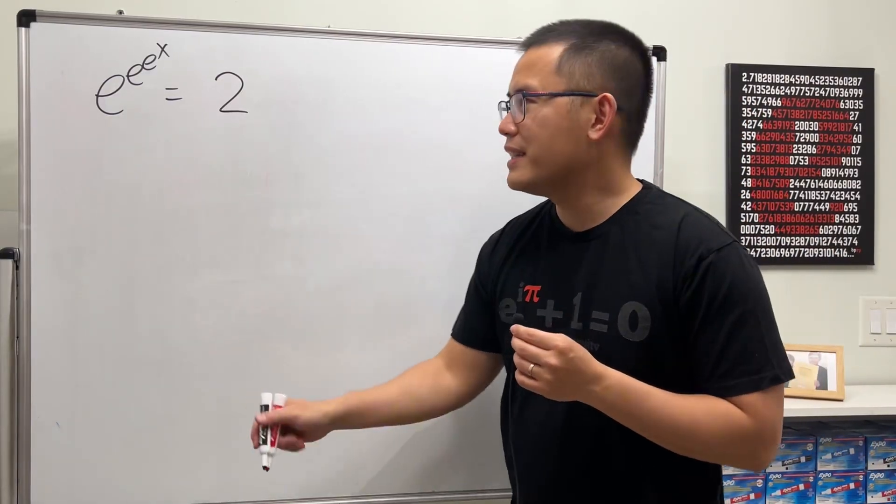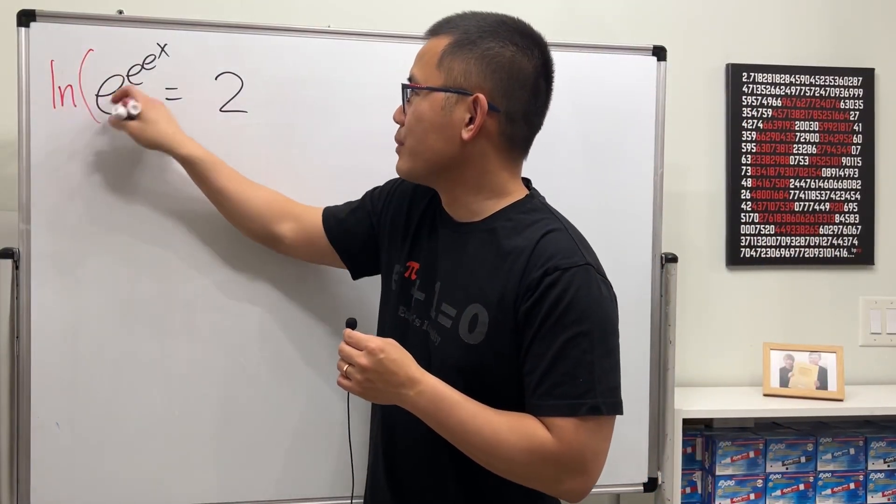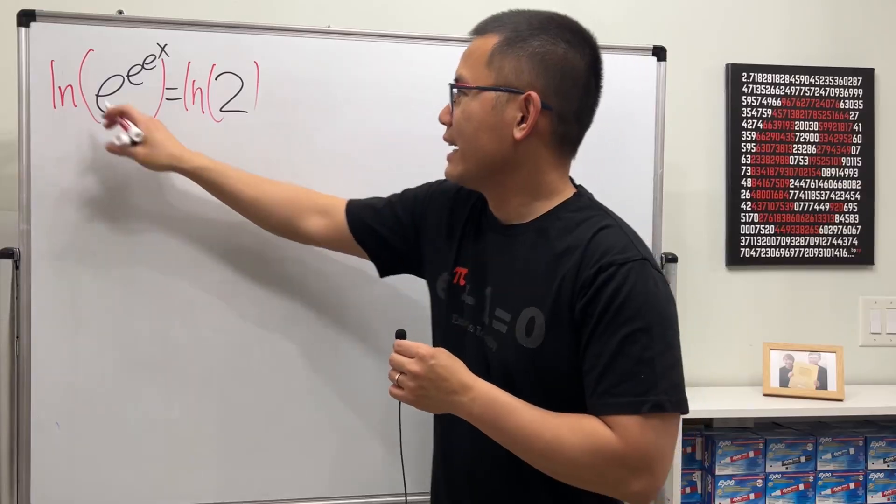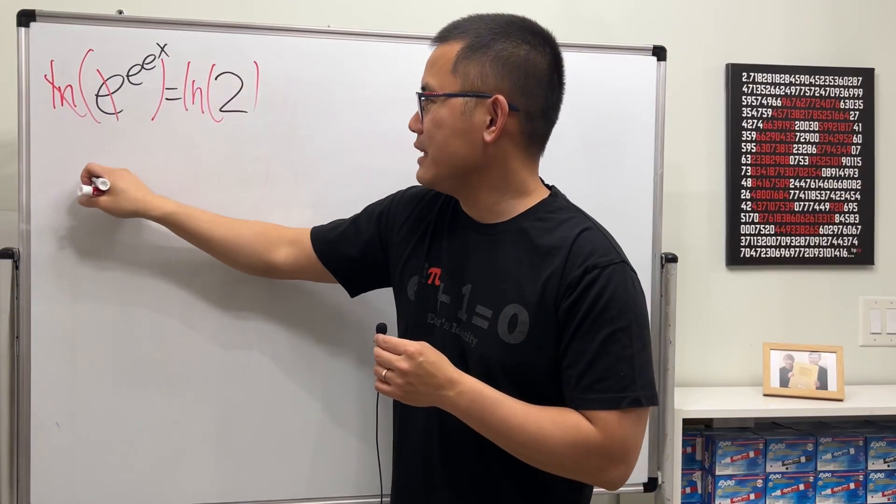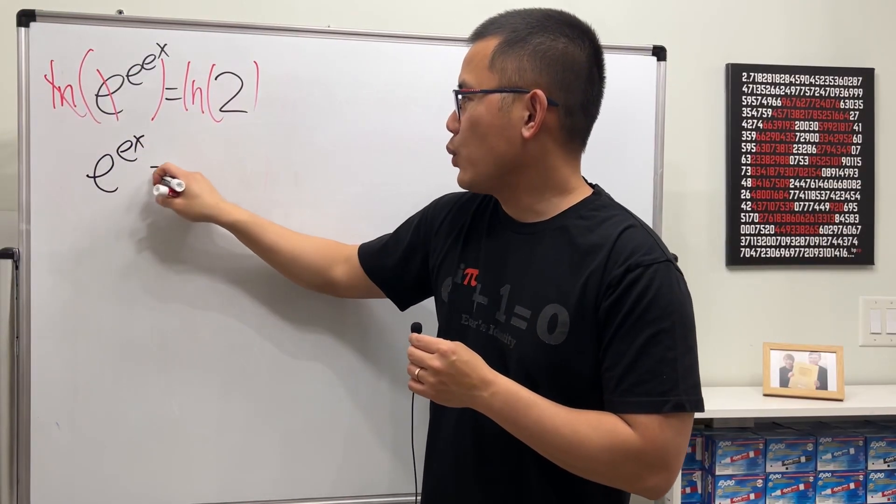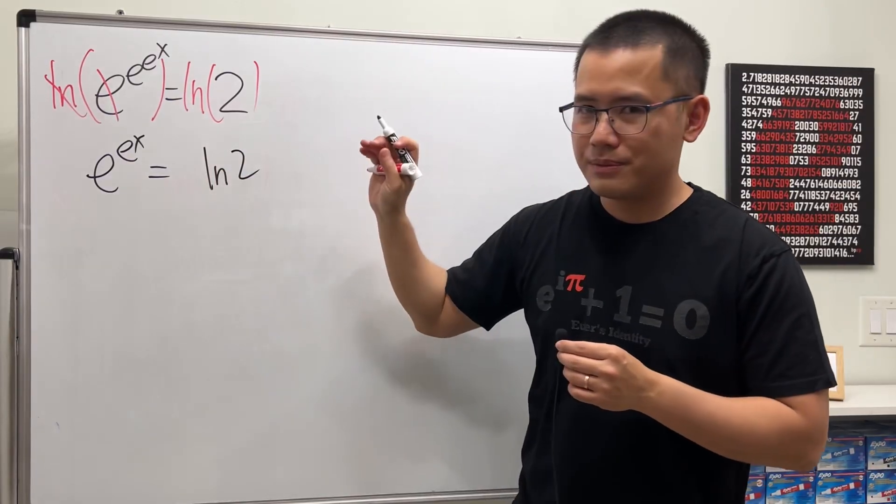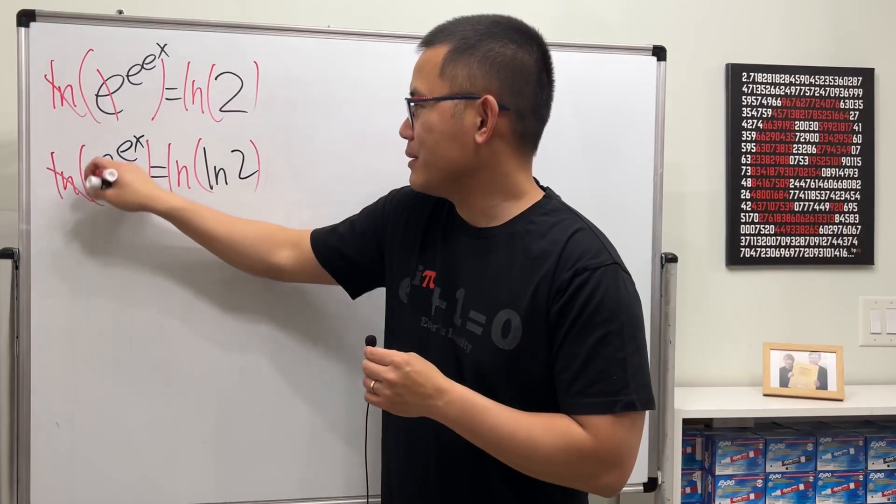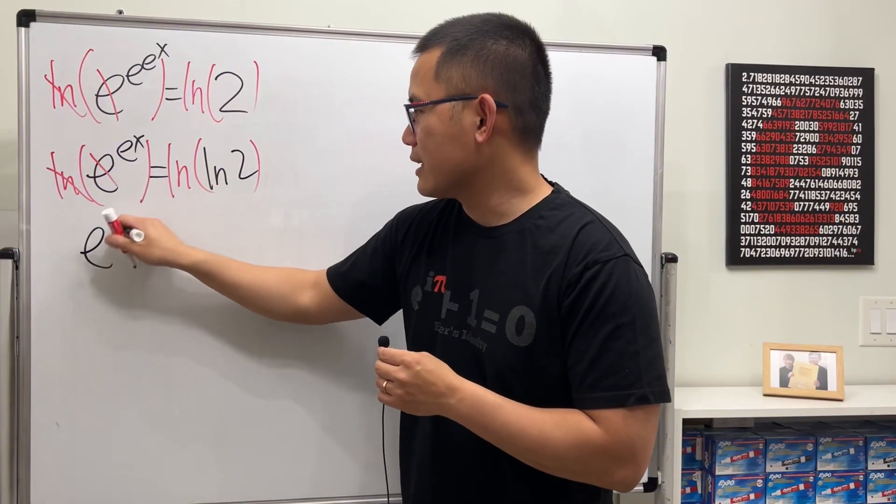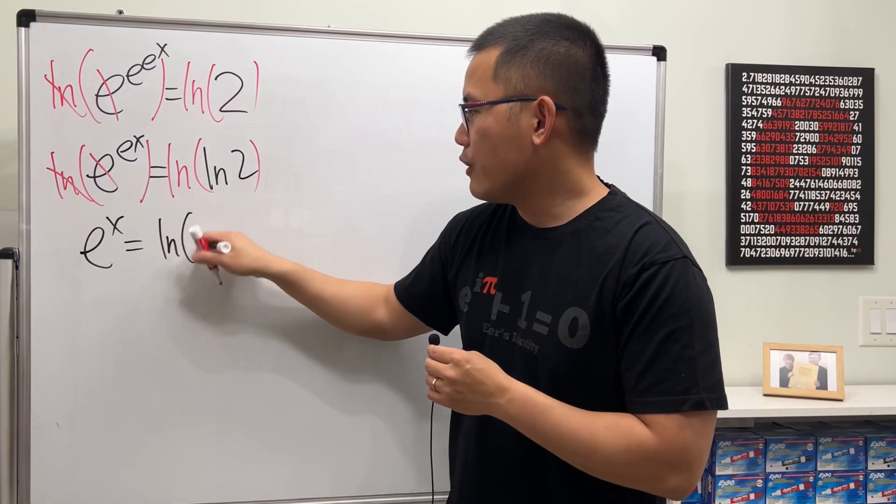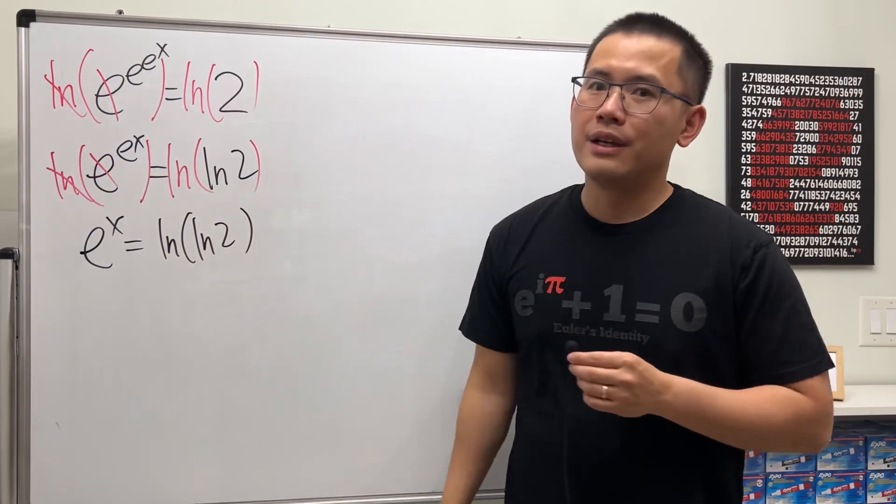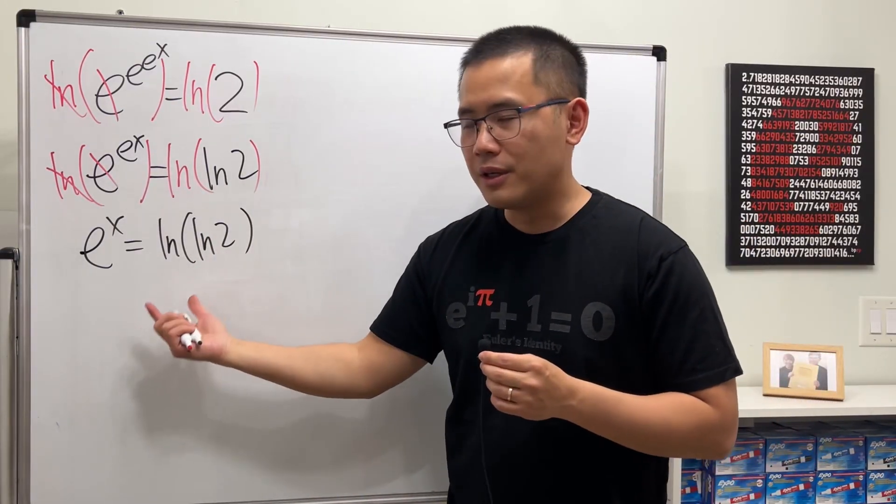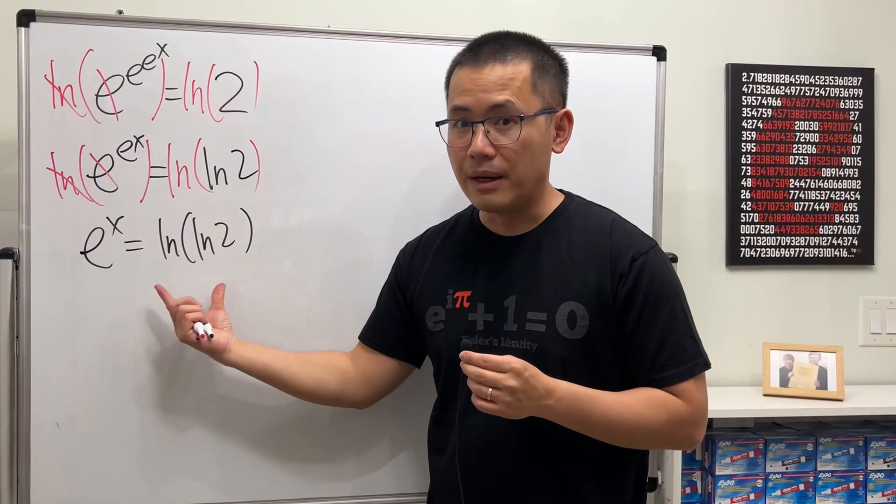All right, let's solve this equation. First, we take the natural log on both sides. Cancel, cancel. And we have e^(e^x) equals ln(2). Then, just do it again. Take the natural log on both sides. This is still legitimate. And we get e^x equals ln(ln(2)). Now, per our discussion earlier, this right here is a negative number.